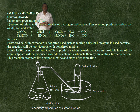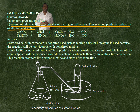Oxides of carbon. We start with the first one: carbon dioxide. Laboratory preparation — method one: by the action of dilute acids on carbonates or hydrogen carbonates. This reaction produces carbon dioxide, salt, and water.